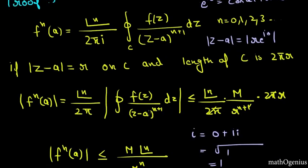So this whole thing because of this M is less than equal to this thing in here where M times 2 pi r.